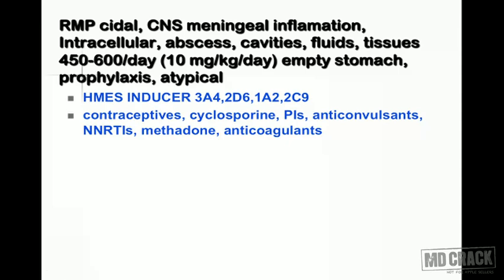If a woman receiving oral contraceptives develops tuberculosis and is started on rifampin, rifampin will increase the breakdown of the contraceptive drug, reducing its effect — and she could become pregnant despite being on contraceptive pills. Similarly, cyclosporine, protease inhibitors, anticonvulsants, NNRTIs, methadone, and anticoagulants all have accelerated metabolism and reduced effect.